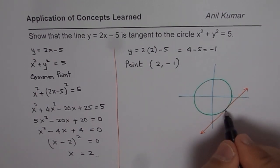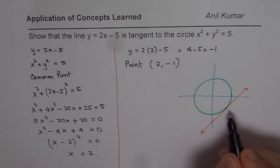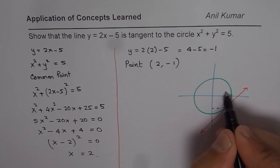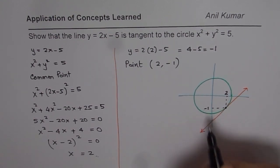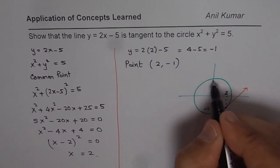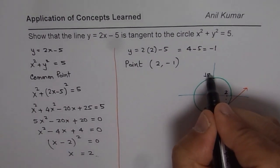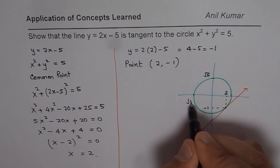And it is tangent since it touches the circle only at one point, and that point happens to be at x equals 2 and y equals minus 1. You get the idea? This is square root of 5, this is also square root of 5.